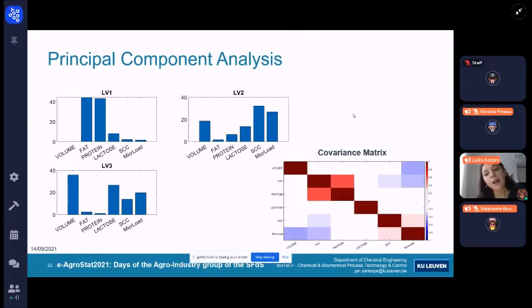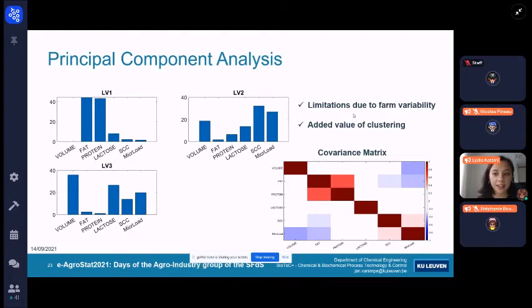Also, when we are looking at the covariance matrix of the variables, we can see in the covariance matrix that we have a positive correlation among protein and fat and a slight negative correlation among microbial load and volume. However, we still face some limitations due to farm variability and these results demonstrate the added value of the clustering we did earlier.